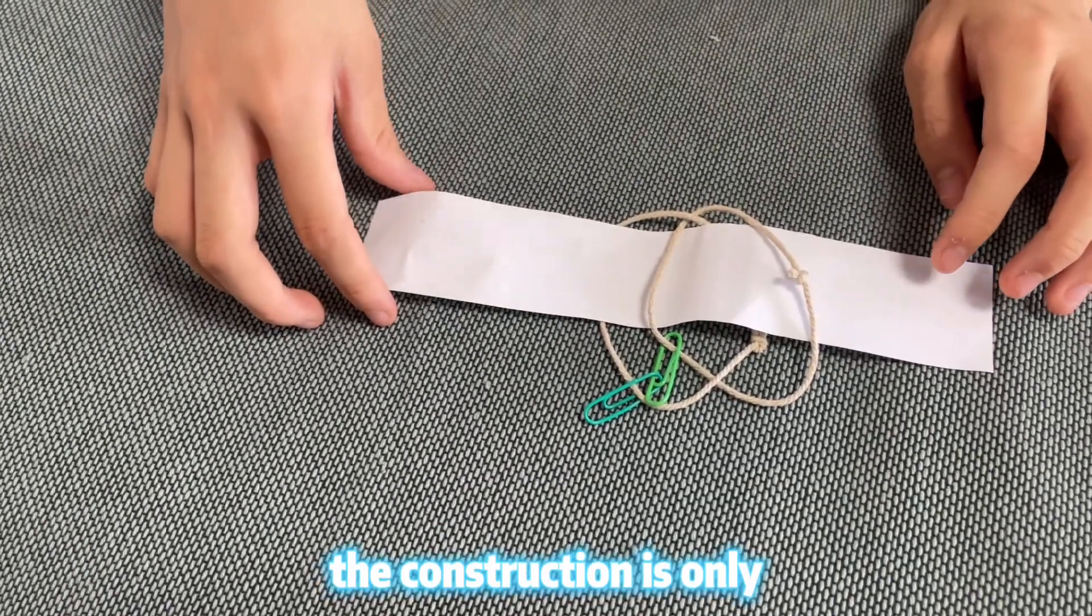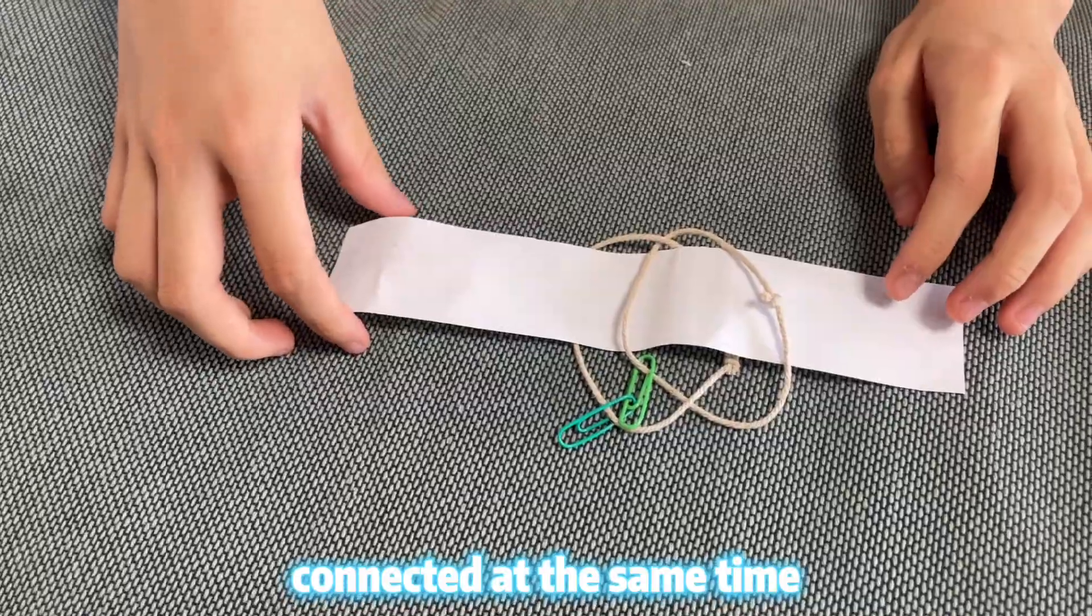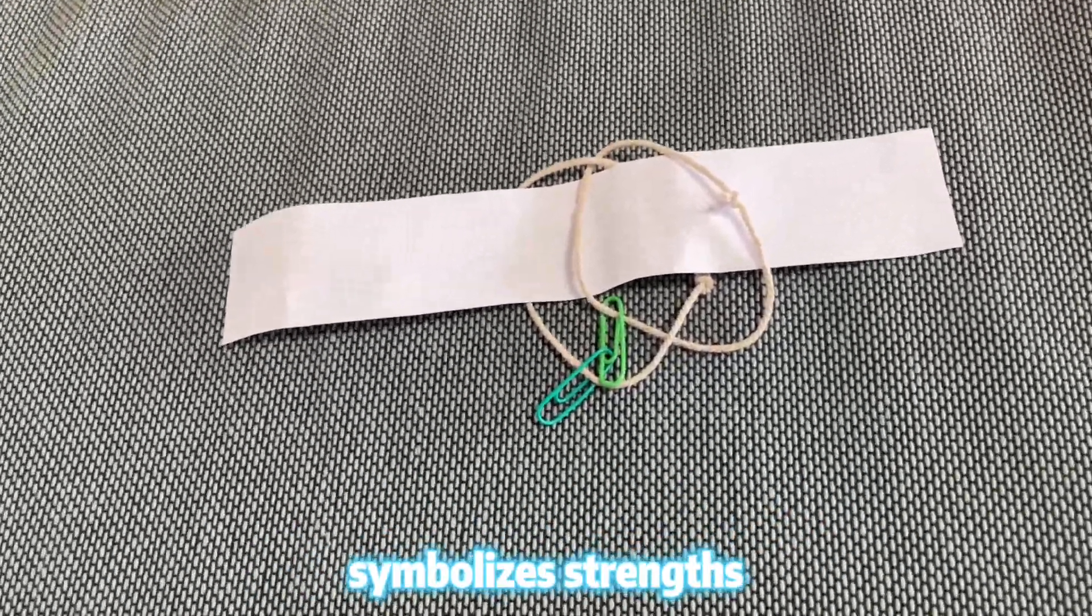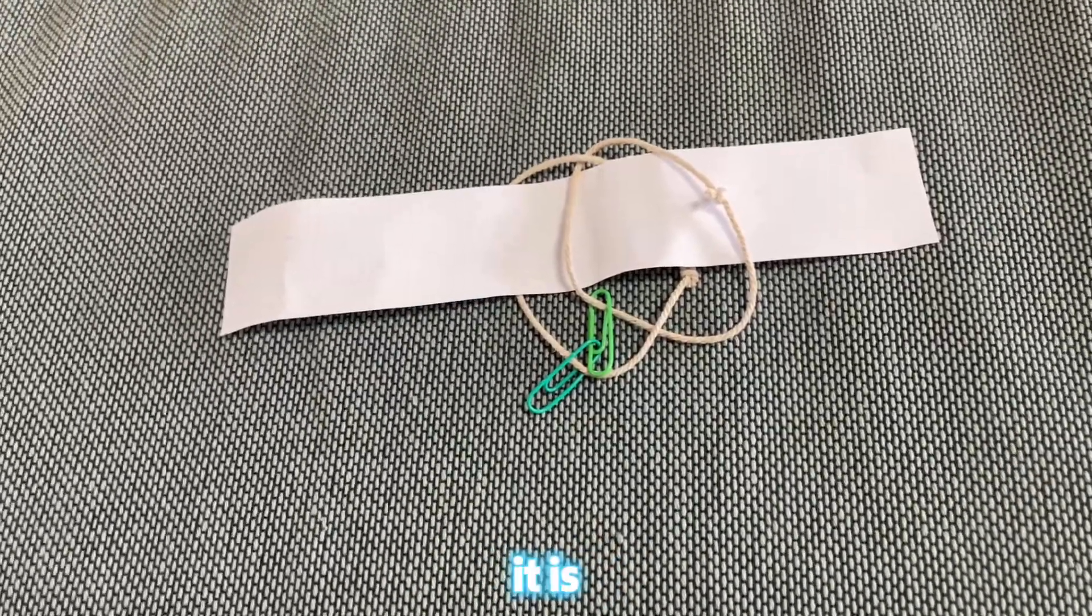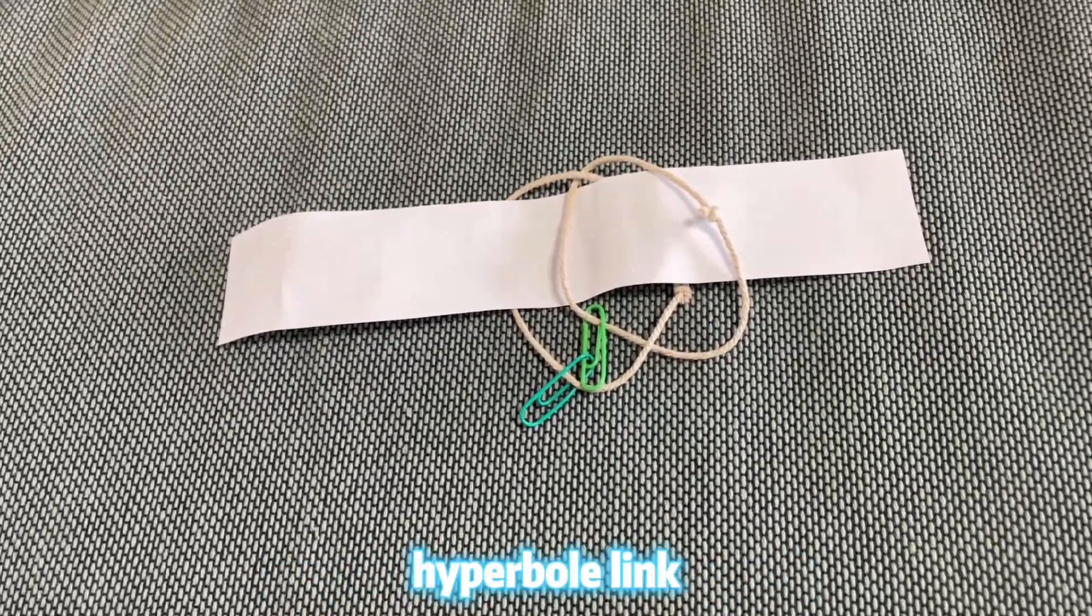The construction is only satisfied when the three of them are connected at the same time. The Boromian link indicates and symbolizes strength in unity. It is a part of the not theory and hyperbolic link.